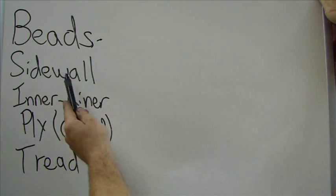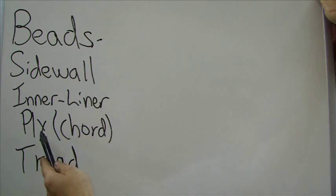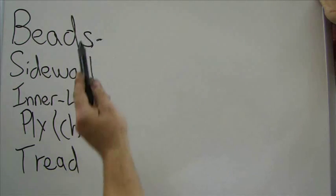They'll have beads, two beads, a sidewall, inner liner, ply, cord that can either be a polyester, Kevlar or a steel cord and they have tread. But let's talk about the beads first.